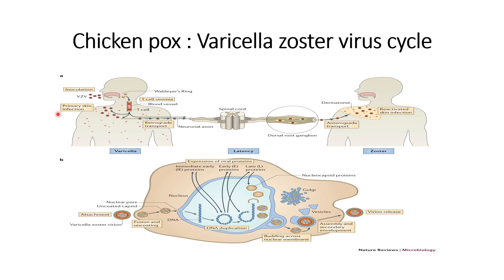The primary infection is also ongoing. After some time, once latency has been developed, the virus starts to transport via integration — it moves out from the cells and starts to show infection on the skin in the form of reactivated skin infection. This is the secondary form of infection, whenever latency overcomes the immune system of the body.